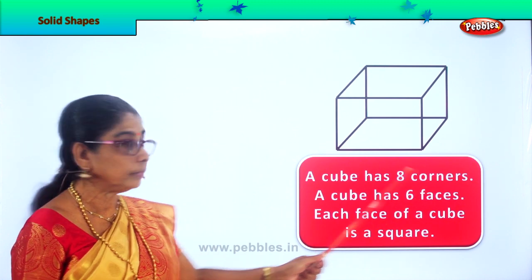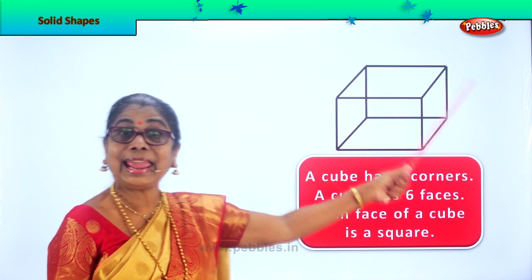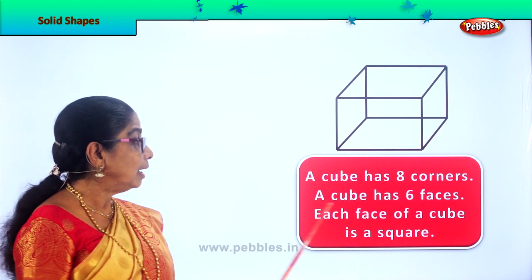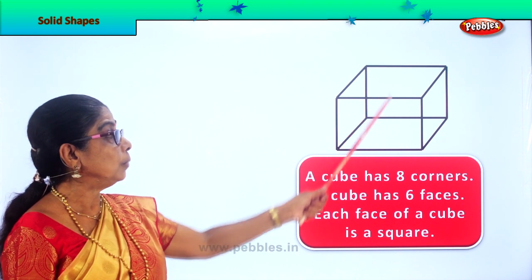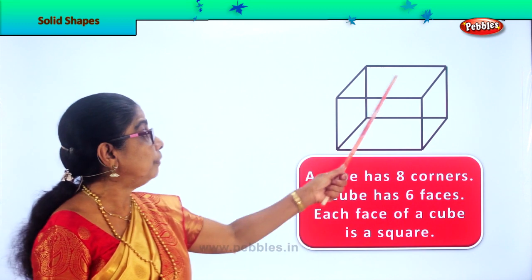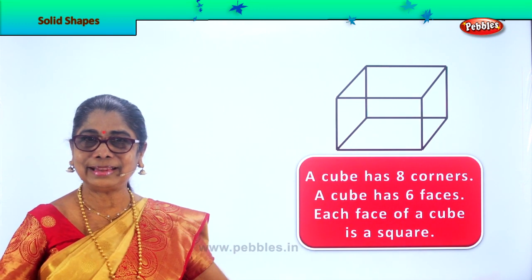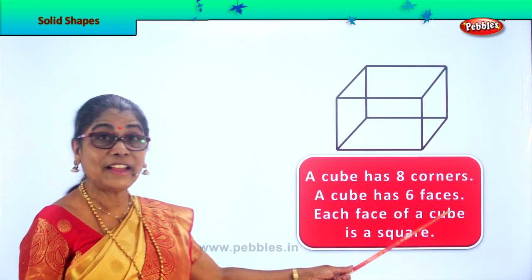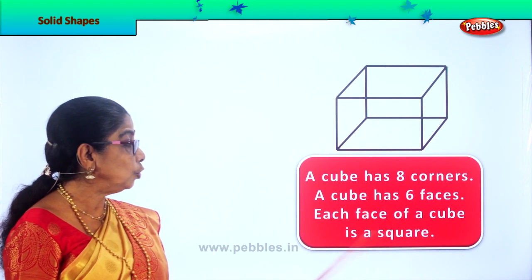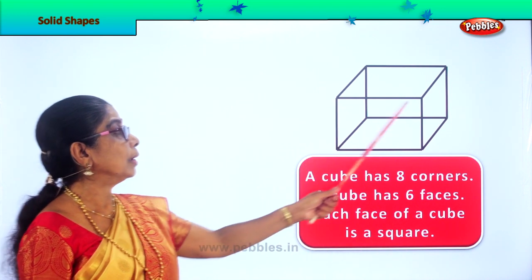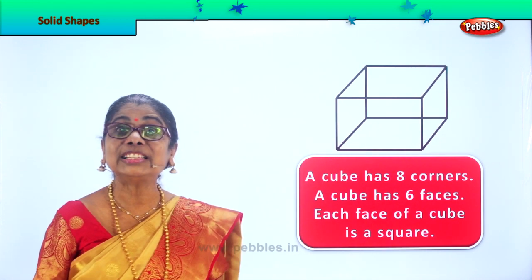Shall we count the corners? One, two, three, four, five, six, seven, eight. Good. A cube has six faces. One at the top, one at the bottom. One, two, three, four, five, six. Two sides, that's four, top and bottom — six faces a cube has. Each face of a cube is a square.